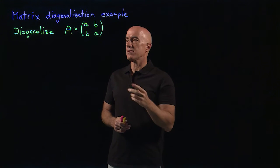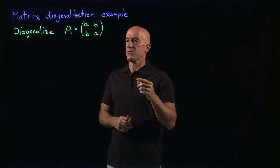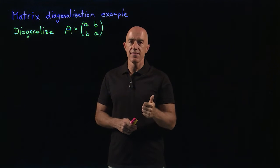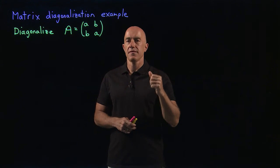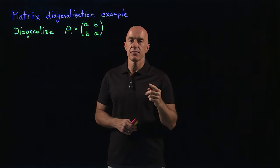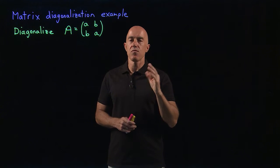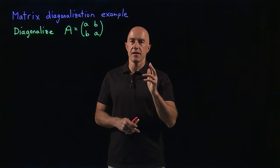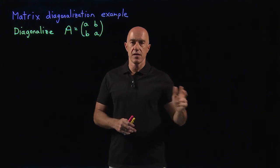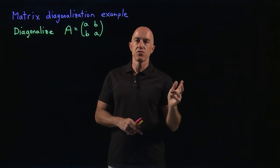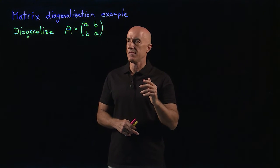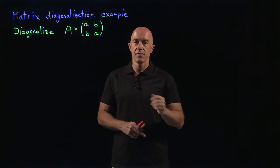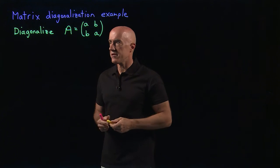To diagonalize this matrix, first we have to find the eigenvalues, then we have to find the eigenvectors. And once we've done that, you'll see that we can, without too much trouble, write down the diagonal form of this matrix. So let's start.